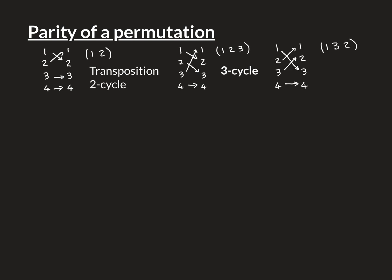Here is another example of a three-cycle — in fact, this is the three-cycle you get if you compose the previous cycle with itself. In this one, 1 goes to 3, 2 goes to 1, and 3 goes to 2. We would write this as (1 3 2): 1 goes to 3, 3 goes to 2, and 2 goes to 1.